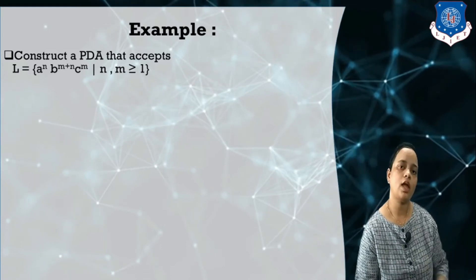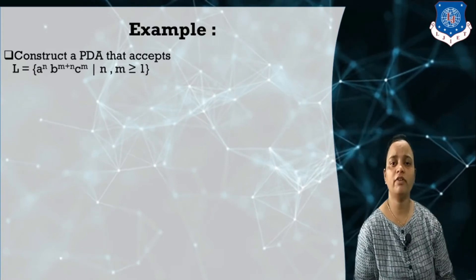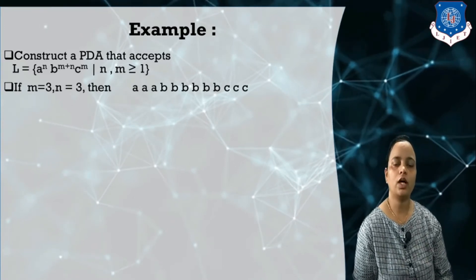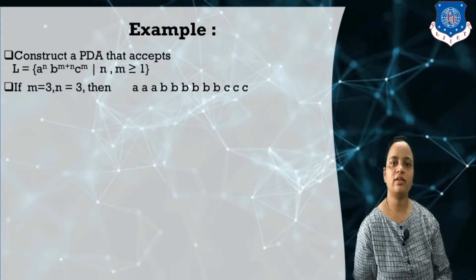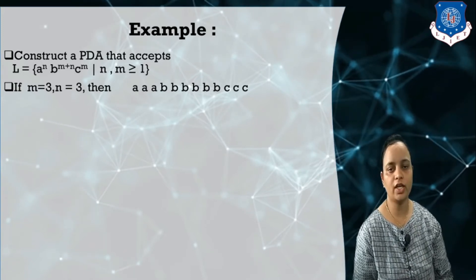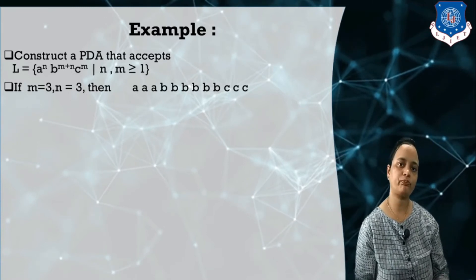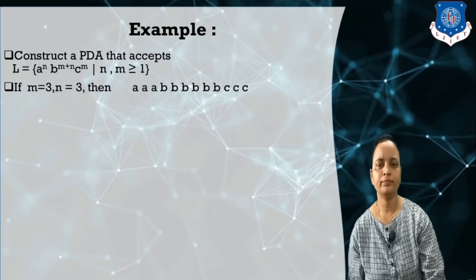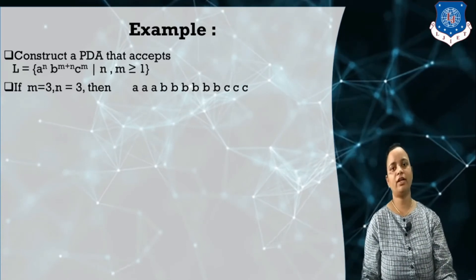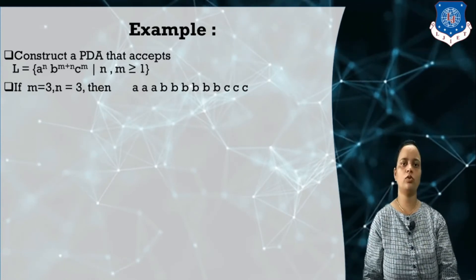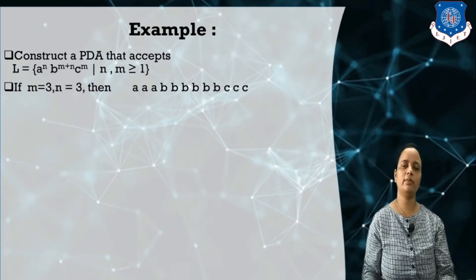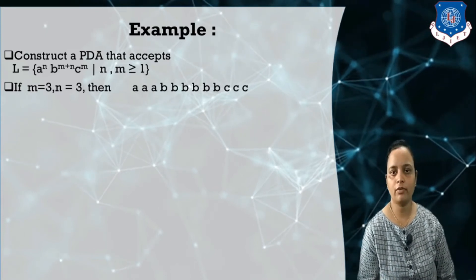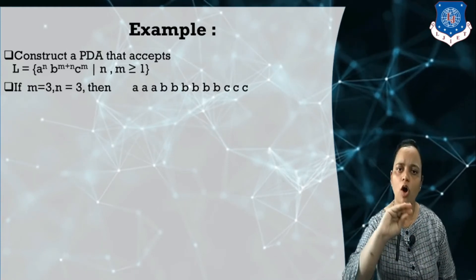To determine this, we first take a valid string. I am taking m equal to 3, n equal to 3. So the counting of a is 3, b is 6, and c is 3. Always remember: before designing a PDA, we take a valid string, and we should not pick the minimum length string but rather some larger values, so that we can cover all the possible transitions.